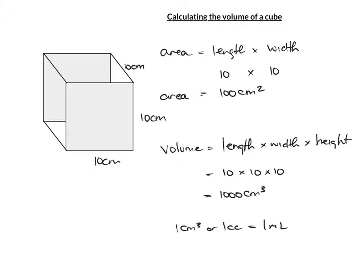Using the metric steps explanation then, we would be able to see that this 1,000 centimeters cubed is actually equal to 1,000 milliliters, which is equal to 1 liter.